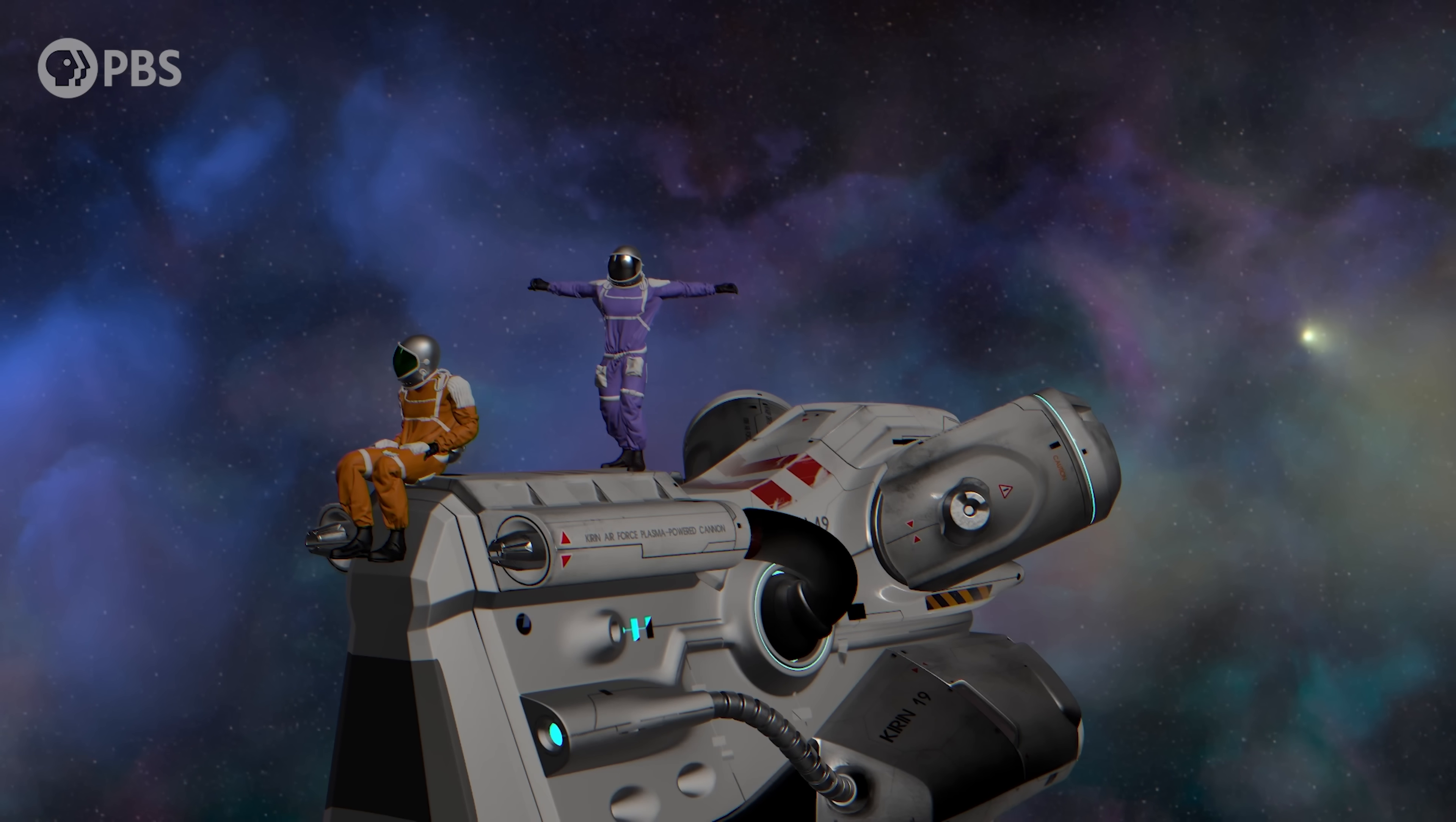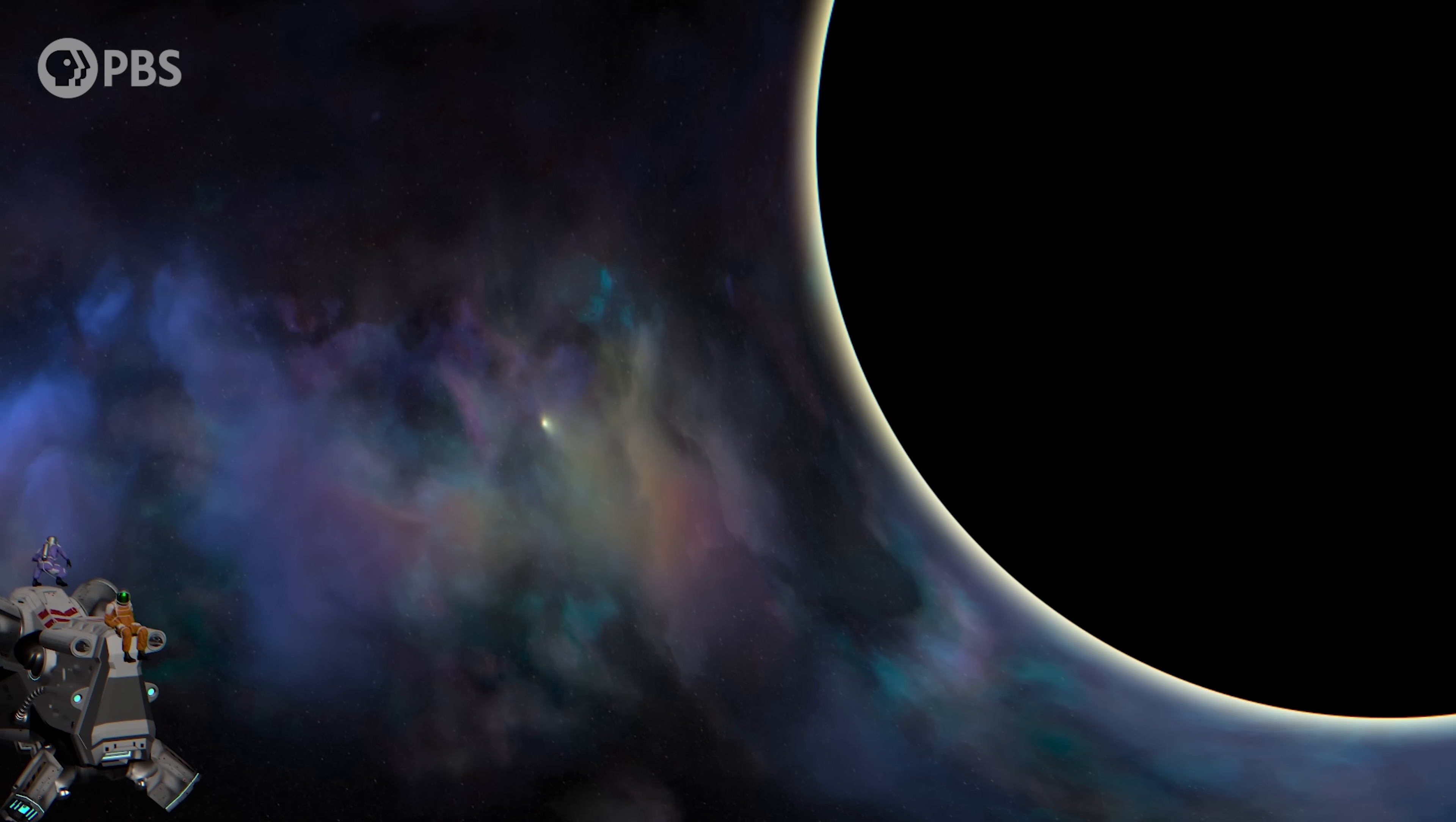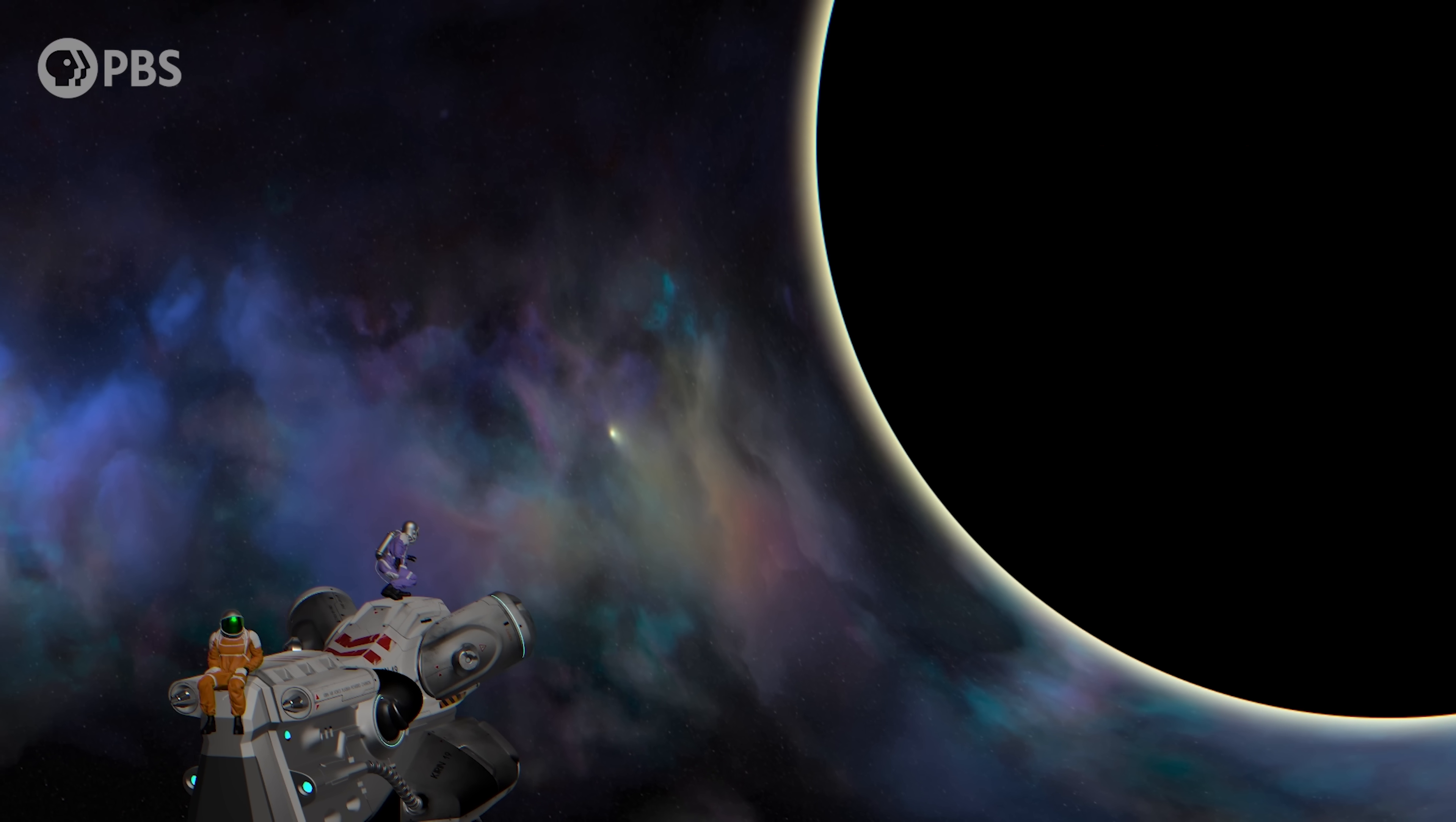And for that, we need Alice and Bob to jump into a black hole. Well, just Alice actually. She's always been a bit more adventurous than Bob. So, Alice and Bob head to Sagittarius A-star, the supermassive black hole at the center of the Milky Way. Alice suits up and prepares to jump. Bob prepares to watch from a safe distance.